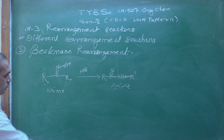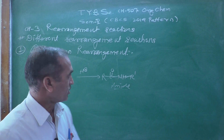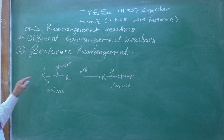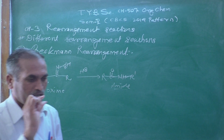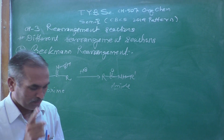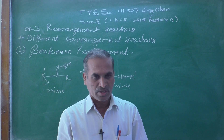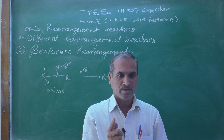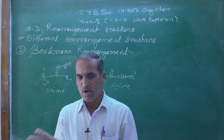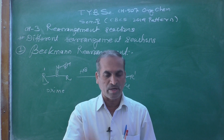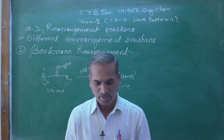In this reaction, the R group and the R′ group and the hydroxyl group are anti to each other. Therefore, the Beckmann rearrangement reaction is highly stereospecific — meaning one and only one product is formed. That is what is known as a stereospecific reaction.